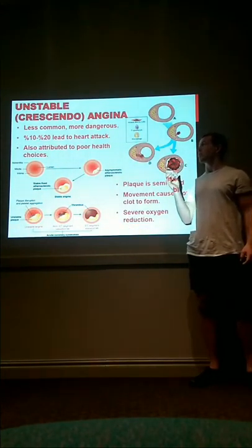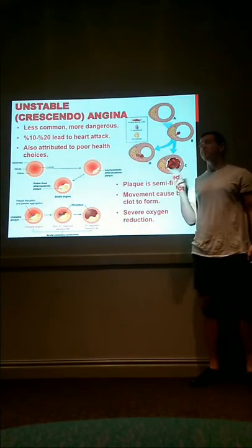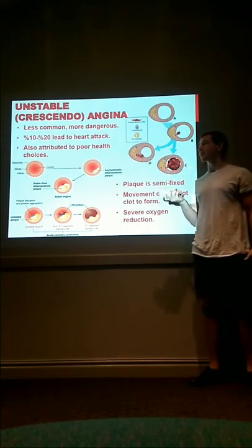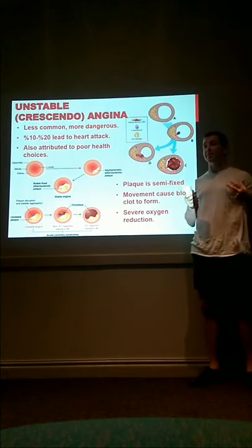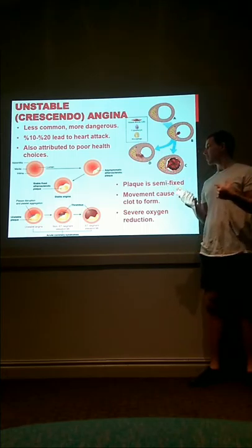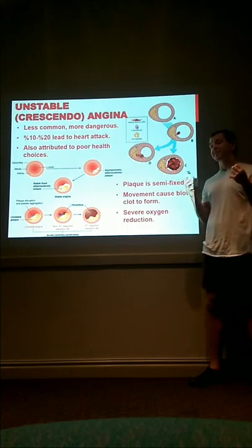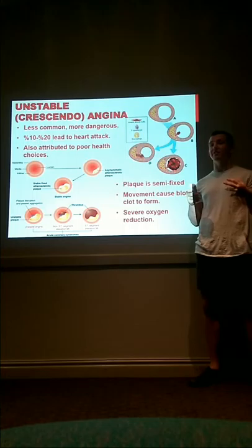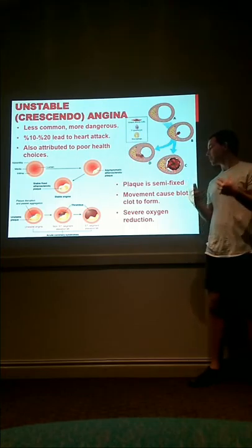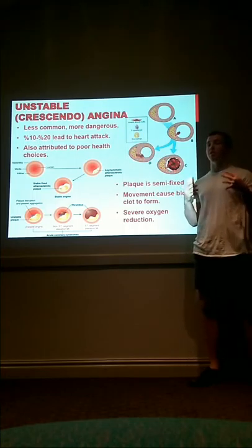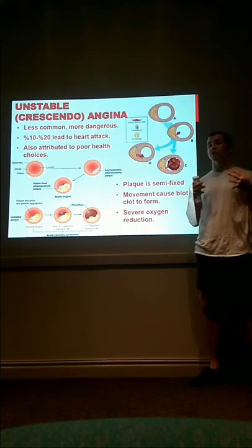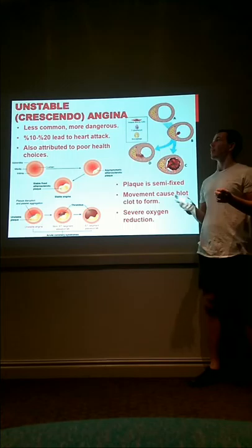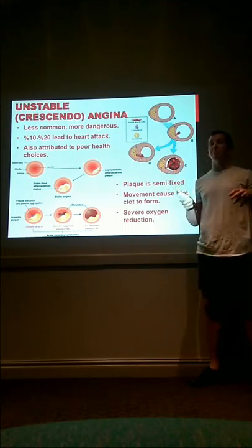Unstable angina, or crescendo angina, is much less common but much more dangerous, with about 10 to 20% of cases leading to heart attacks. This is also attributed to poor health choices, but the plaque inside the arteries is semi-fixed, which means it can move and allow blood clots to form on top. This can in turn cause a thrombosis involving severe oxygen reduction to the tissues, and can occur at any time — which is why it must be treated immediately.